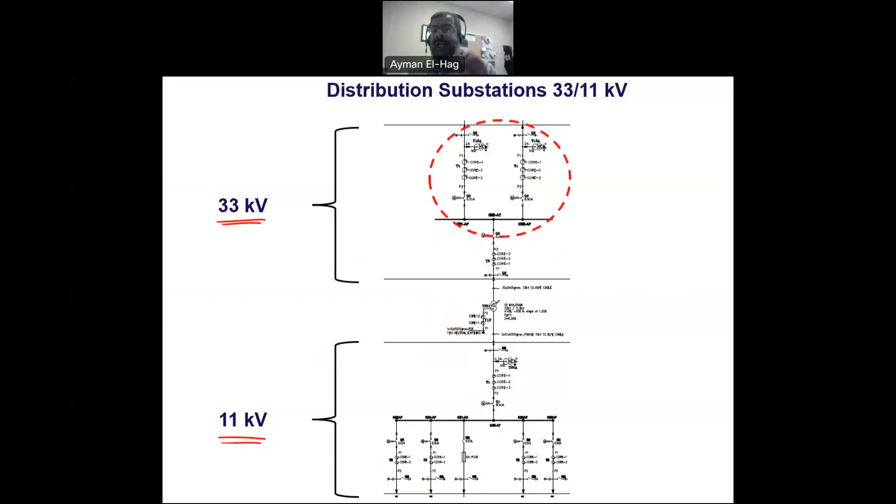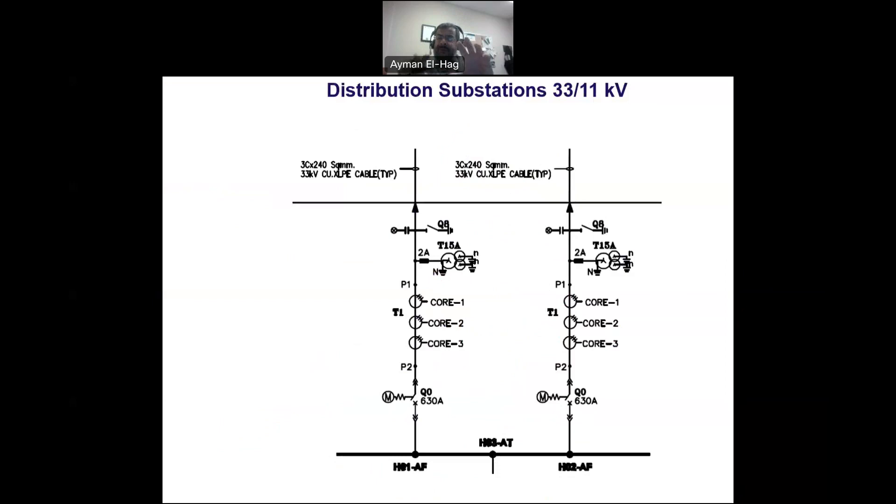Let's start with the 33 kilovolt system where you have the incoming from another substation, which will step down the voltage from a transmission level into this 33 kilovolt system. Here you can see that we have a covered XLPE underground cable. It is 3C, which means three core, so a single conductor has the three phases inside that specific conductor.